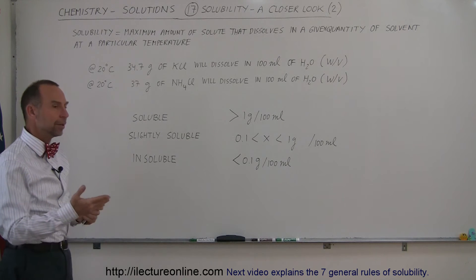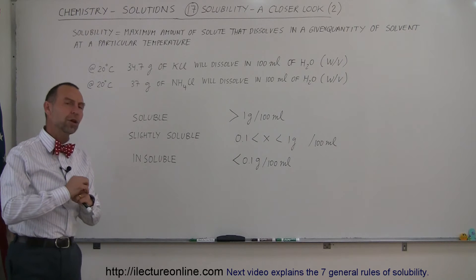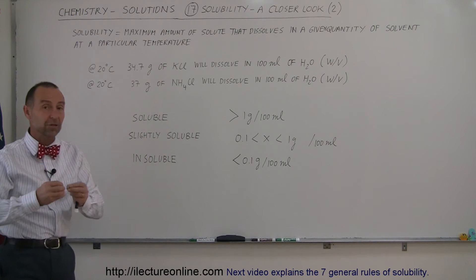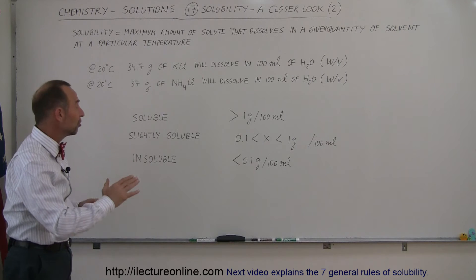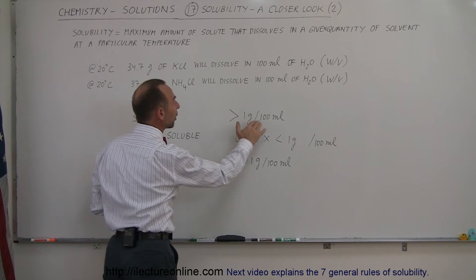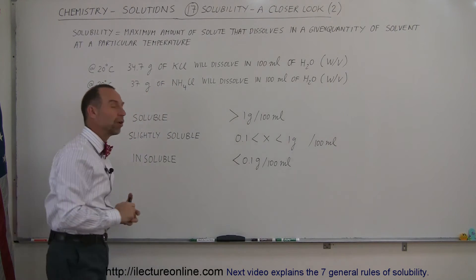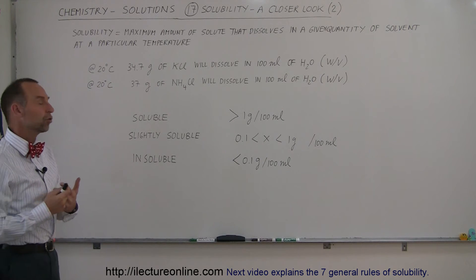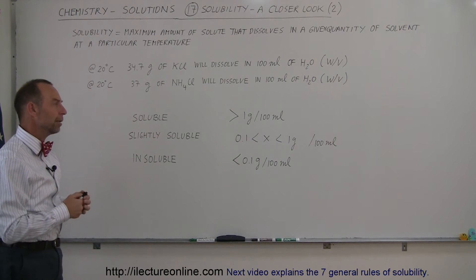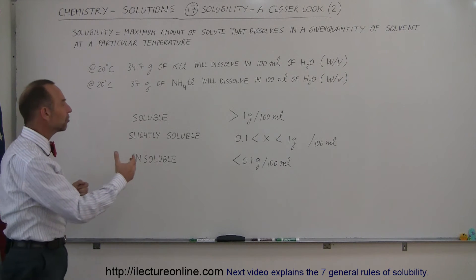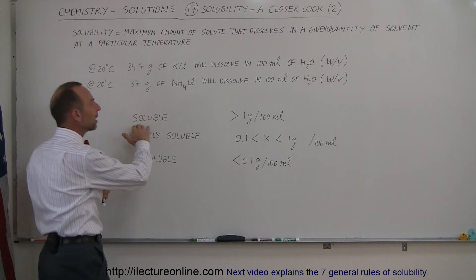But other solutes that are far less soluble than that can still be considered soluble. The definition says that as long as at least one gram per 100 milliliters of solvent dissolves, then you can consider it soluble. So some compounds or solutes will not dissolve to a great extent, but sufficient so we can say that they're soluble.